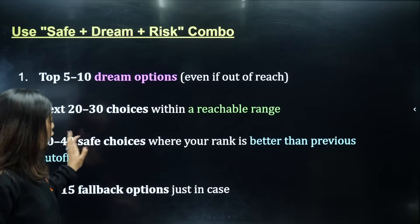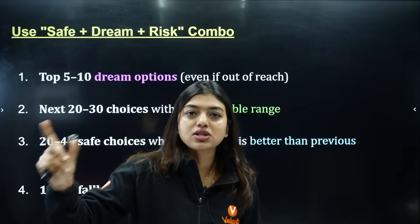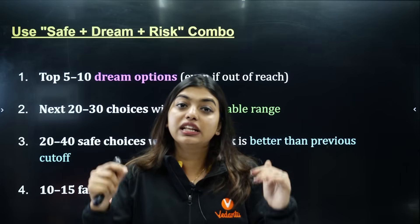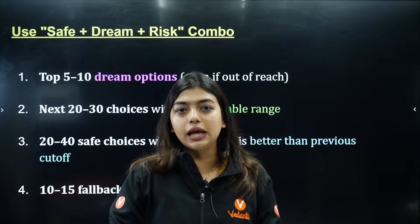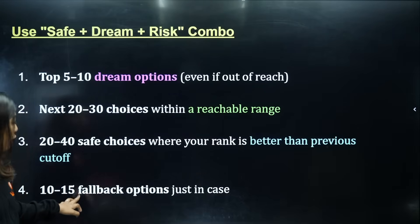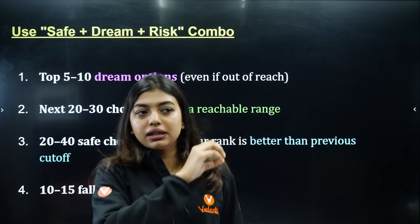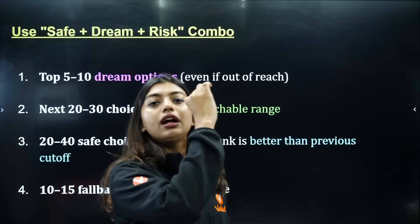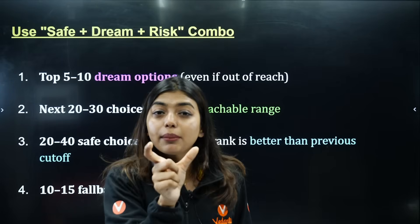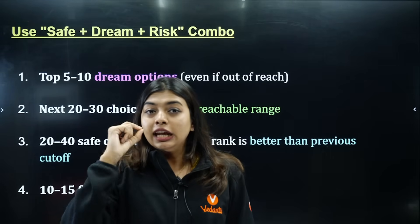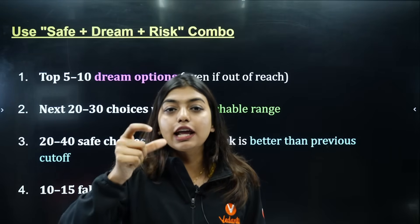For those 20 to 30 reachable choices, check where students from 18,000 to 25,000 or 30,000 joined last year, and fill that full range — you have 100% chance there. After that, choices 30 to 40 should be safe choices where your rank is better than the previous cutoff. If last year a student joined at 30,000 and you have 20,000, you are safer — that's your safe choice.